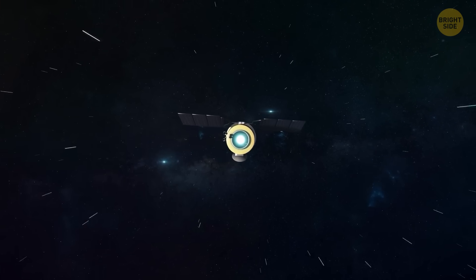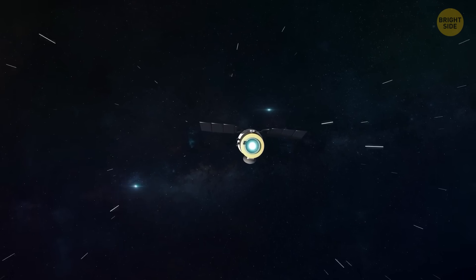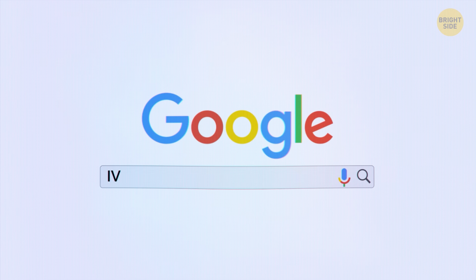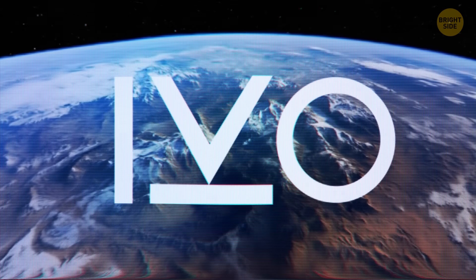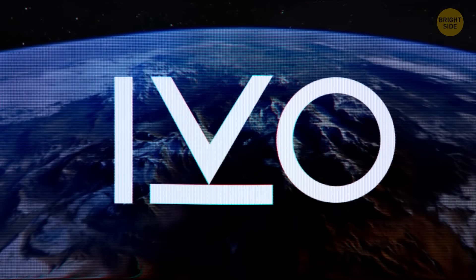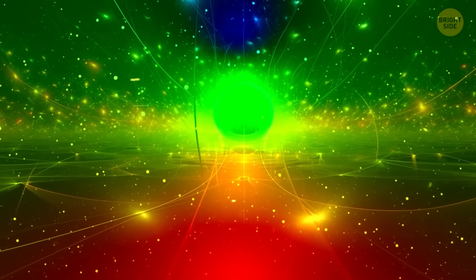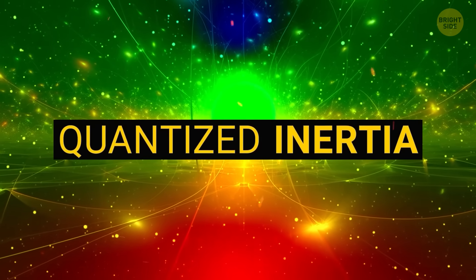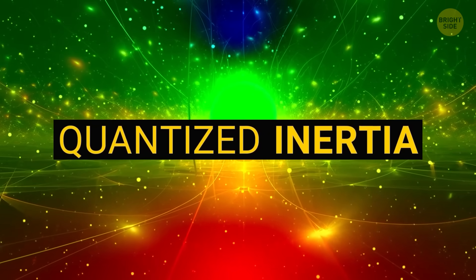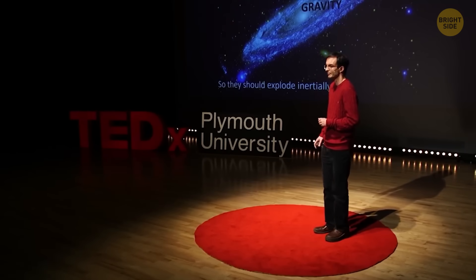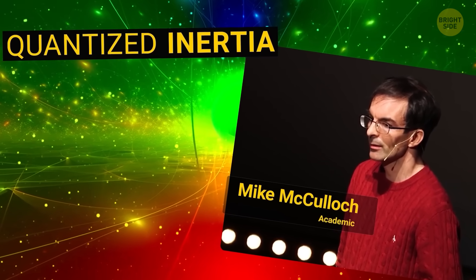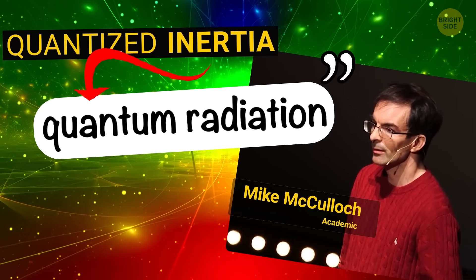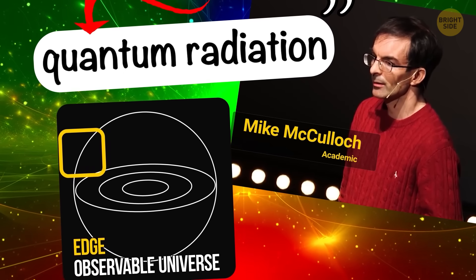It might be real, because it's not the first time we've discovered something like this. Recently, a startup called Ivo Limited claimed they'd built a quantum drive, another propulsion device that apparently didn't need fuel. They said they're tapping into a weird controversial theory of physics called quantized inertia. It was cooked up by a British physicist named Mike McCulloch. He basically said that inertia, the thing that makes objects resist acceleration, isn't a basic rule of nature, but an effect caused by some weird quantum radiation at the edge of the observable universe.